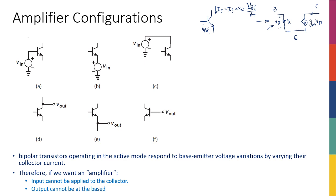Looking at the small-signal circuit, the input must somehow be connected to the base or emitter, because we need to change vpi so that gm·vpi appears at the collector and is amplified. A bipolar transistor operating in active mode responds to base-emitter voltage variations by varying its collector current. This means the input cannot be connected to the collector side — doing so would not change the base-emitter voltage and would not use the transistor as an amplifier.